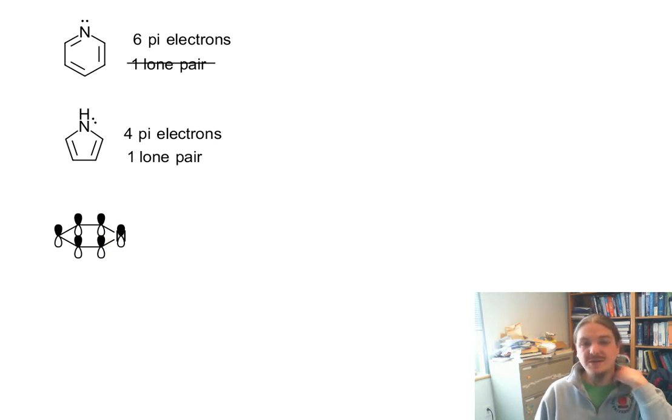So here's pyridine. I'm not showing the double bonds here for clarity. But because there are three drawn pi bonds, I have six molecular orbitals. And I have this lone pair. This lone pair in pyridine is not in a p-orbital. It's actually in this sp2 hybridized orbital.